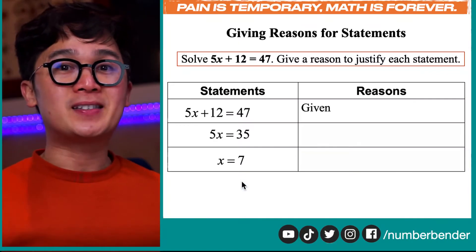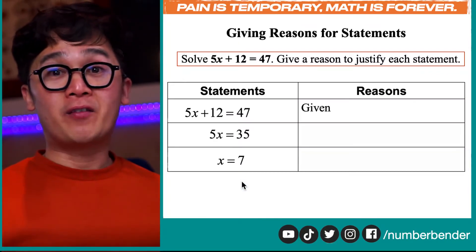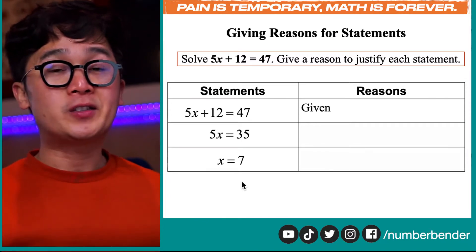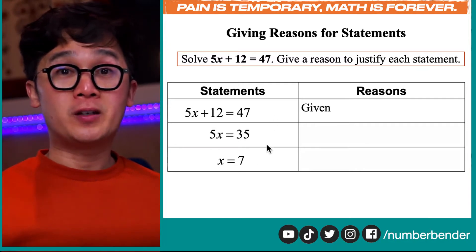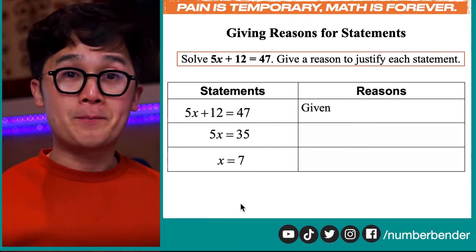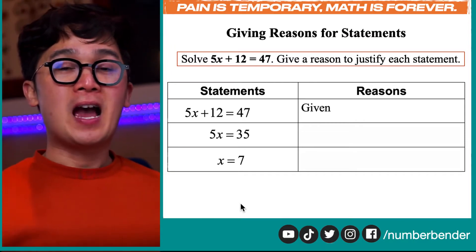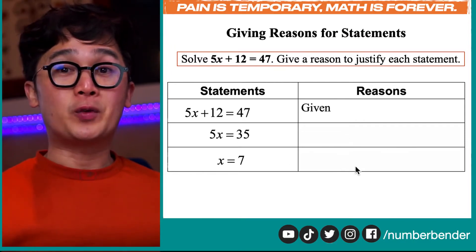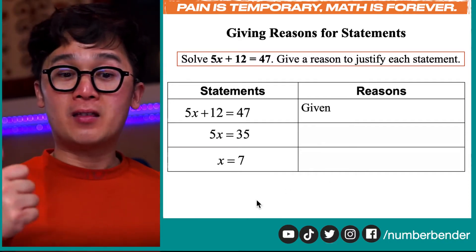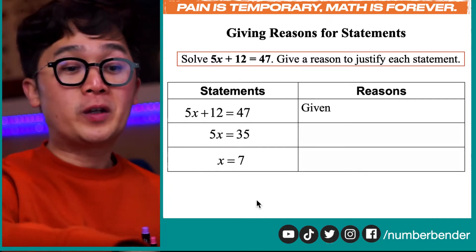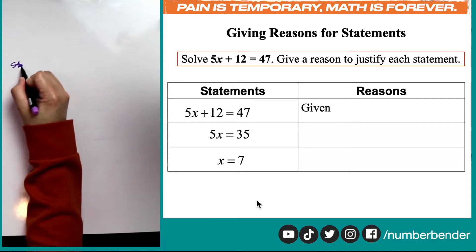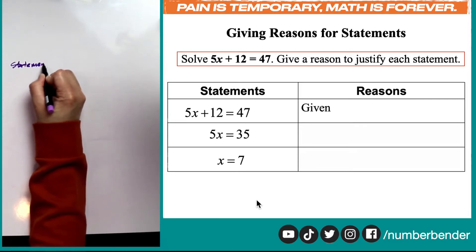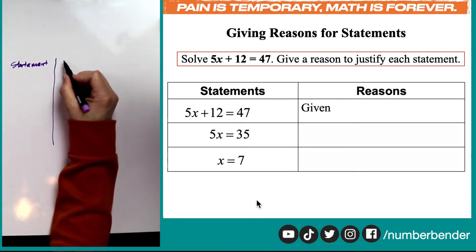Let's start with a basic statement. Our equation is 5x plus 12 is equal to 47, and all we need to do is write a two-column proof showing how we go from line 1 to line 2, and line 2 to line 3. The question is how we are going to fill in the reasons. It's always going to be difficult at the beginning, but through practice we'll achieve expertise.